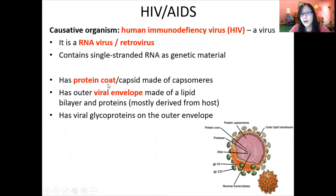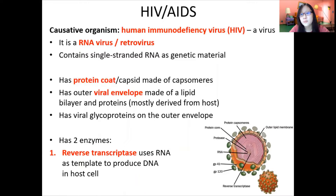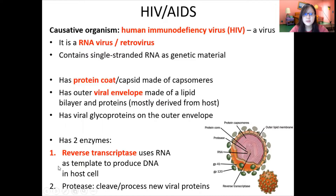Other than these main structural components, there are two important enzymes needed for HIV's function. Number one is reverse transcriptase — everything the reverse of transcription. In transcription, DNA is copied to RNA, but reverse transcriptase uses RNA as a template to produce DNA, converting RNA into DNA. Number two is protease, which cleaves or processes new viral proteins.